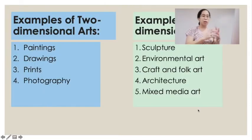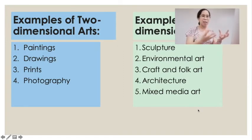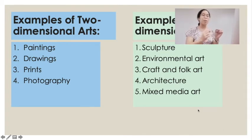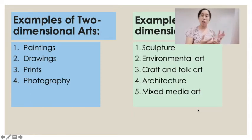Examples of two-dimensional arts include paintings, drawings, prints, and photography. These do not have any depth — you can only see the width and the height. Three-dimensional arts include the depth, and examples are sculpture, environmental art, craft and folk art, architecture, and other kinds of mixed media arts.